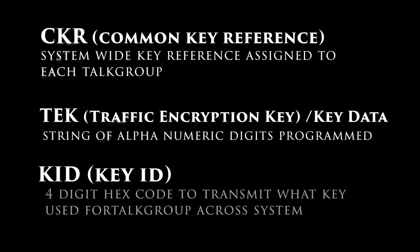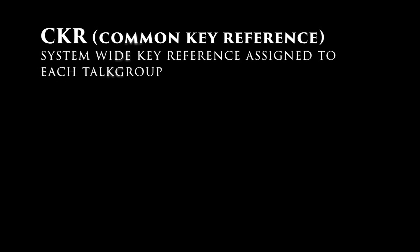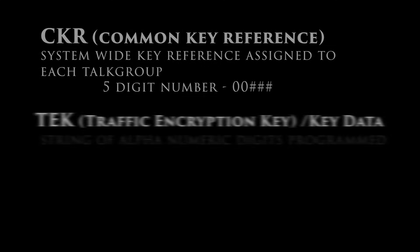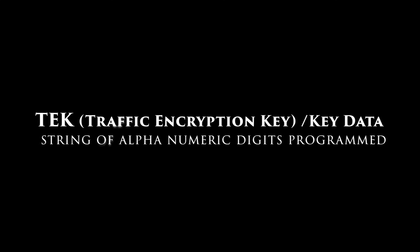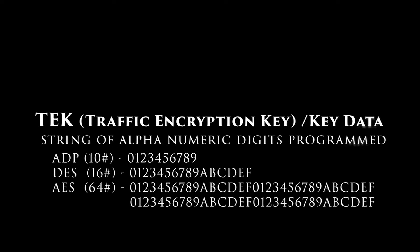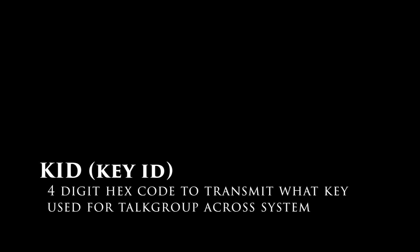There are three different parts of encryption: common key reference or CKR, key data, and key IDs. The CKR is used as a reference between the template in the radio and the key loader, and is a system-wide key reference assigned to each talk group. The TEK, or traffic encryption key, is a string of alphanumeric digits programmed on the key loader and loaded into the radio. The key ID or KID is a four-digit hex code used to transmit what key is used for a talk group across the system — it tells the radio which key the receiving traffic is using.